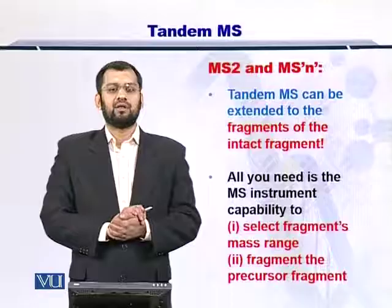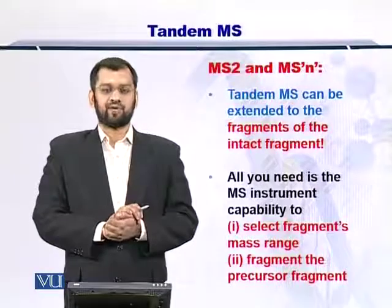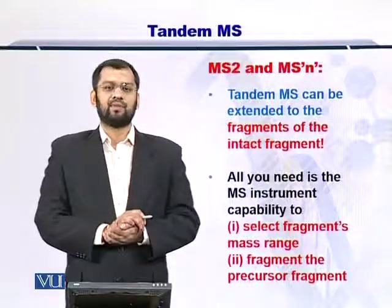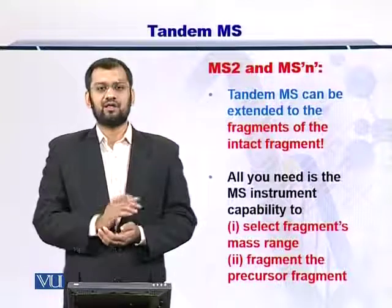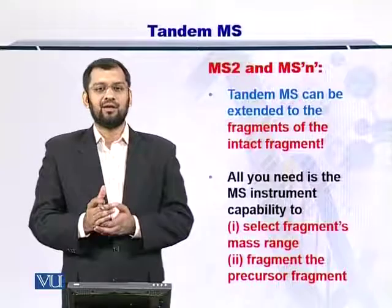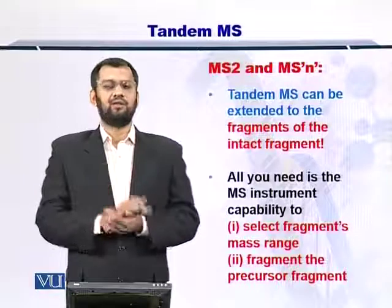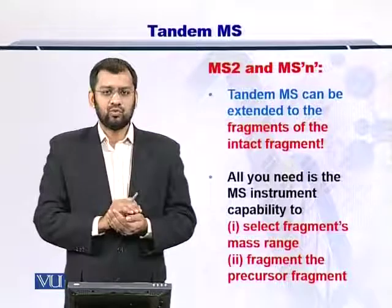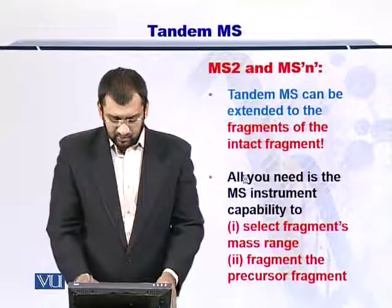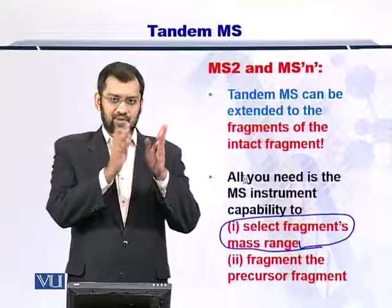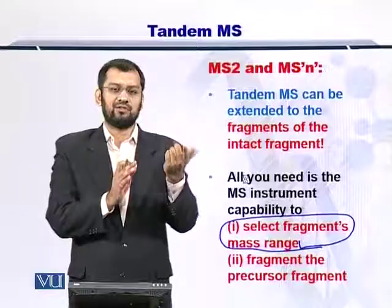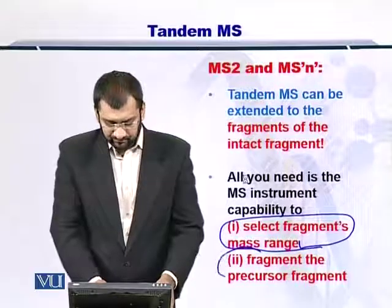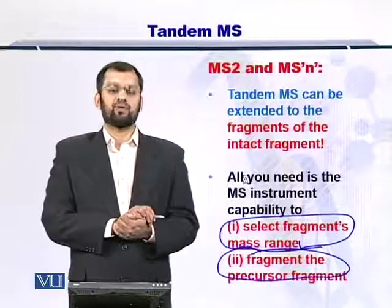Once you have done tandem MS, then you can arrive at the molecular weight of the peptides as well. Typically, this is called MS2. MS2 can yield peptides again, and then you can take them into the fragmentation chamber yet again, thus arriving at MS3. You can keep repeating this process N number of times, where N is the length of the protein or peptide and the number of times it can be fragmented. The two important things to remember are: you have to select the fragment mass range — if there are multiple fragments, you choose which one to take for further analysis — and secondly, you need to have the fragmentation chamber in order to fragment that protein or peptide.